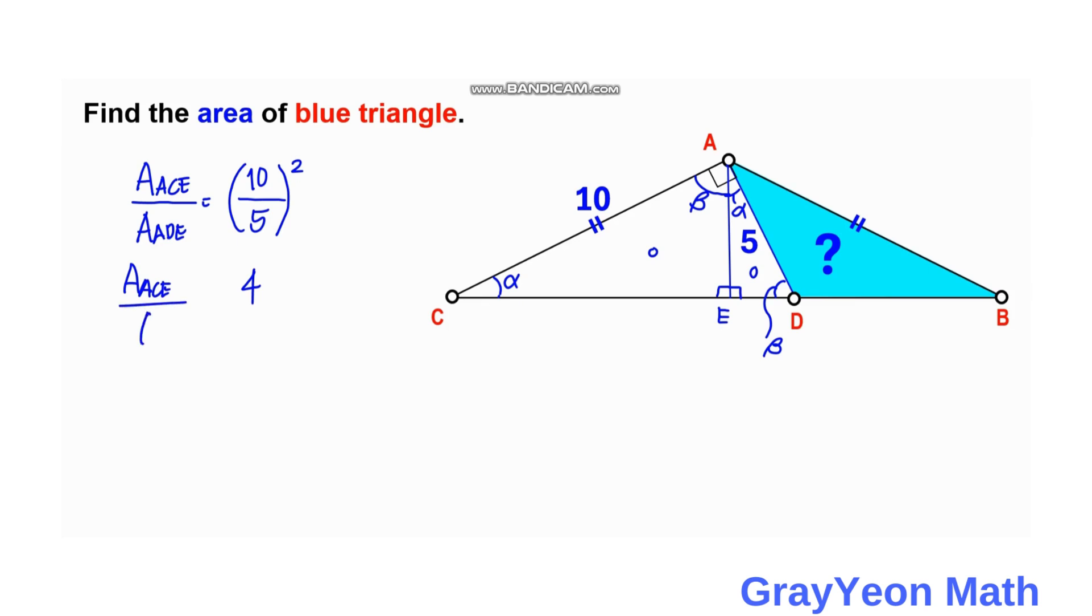So this is 10 divided by 5, which is 2. This becomes 2 squared, which is 4. So the area ratio is 4. So area of ACE over area of ADE is equal to 4, or we can say that area of ACE is equal to 4 times the area of ADE.